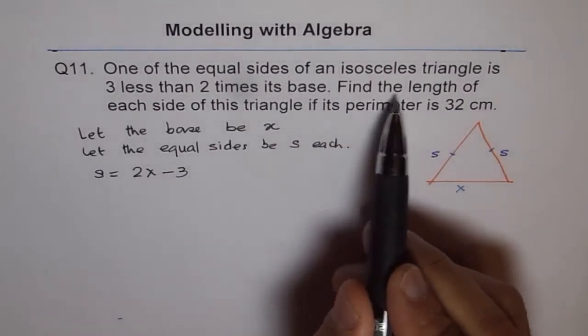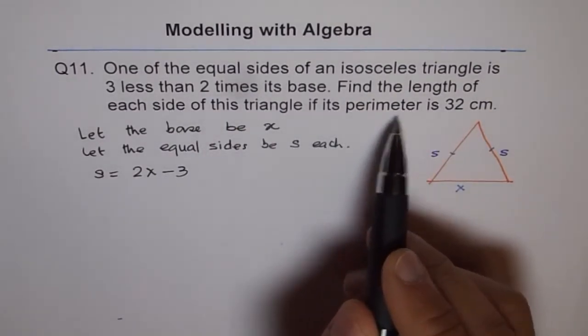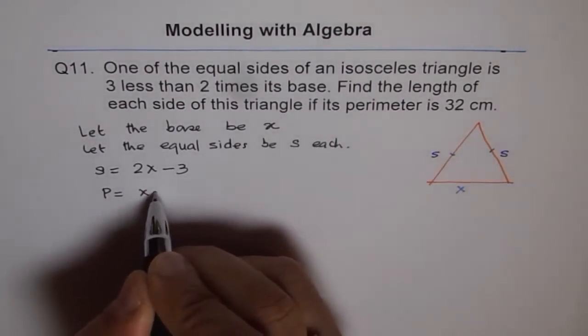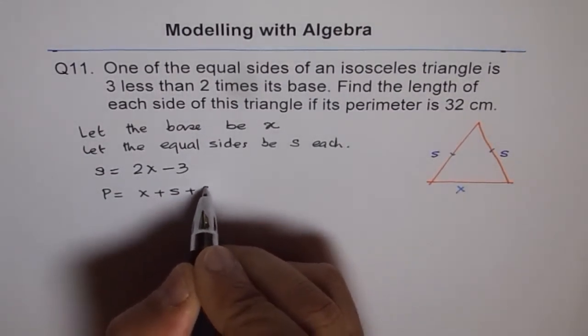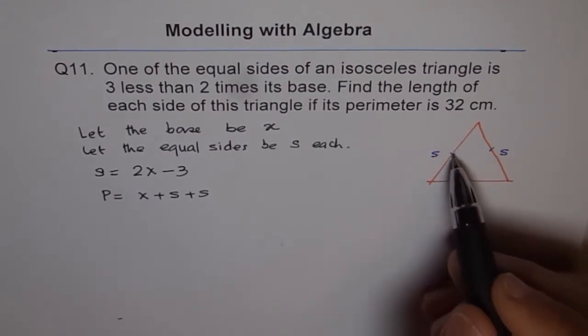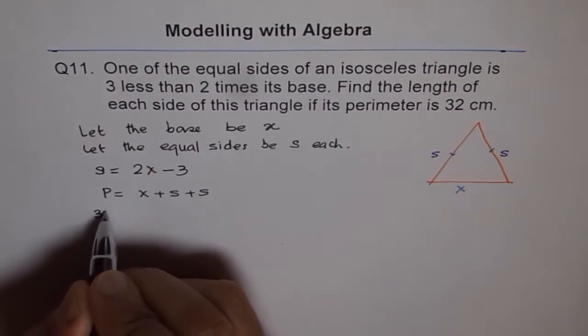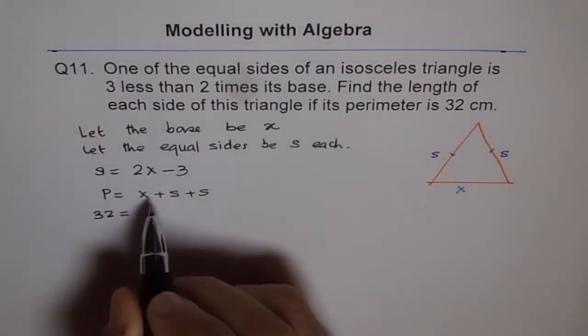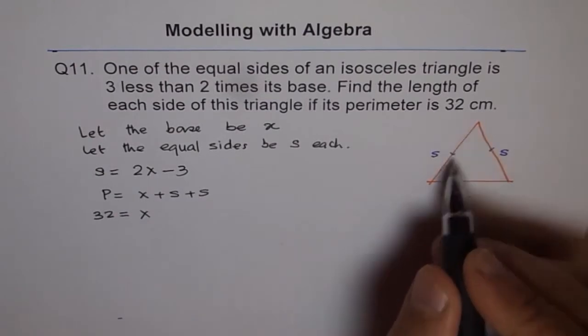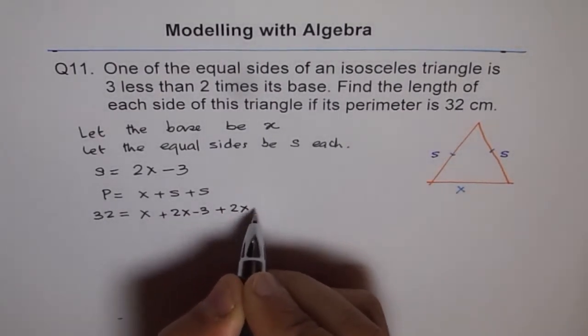Now the question is, find the length of each side of this triangle if its perimeter is 32. What is perimeter? Perimeter is sum of all the sides. So perimeter for us is x plus s plus s, all the three sides. This is an isosceles triangle and therefore these two sides are equal. Now let's place all the values. 32 for perimeter. x is our variable for the base. And instead of s, which is the sides, we'll write 2x minus 3. So we get 32 = x + (2x - 3) + (2x - 3).